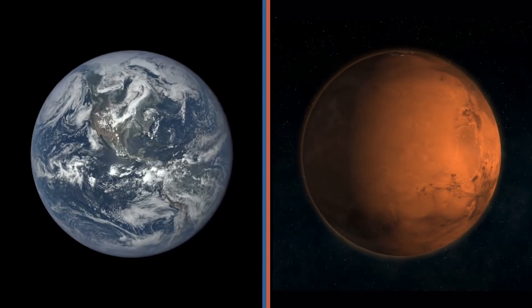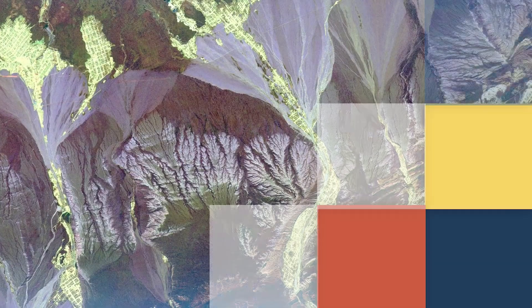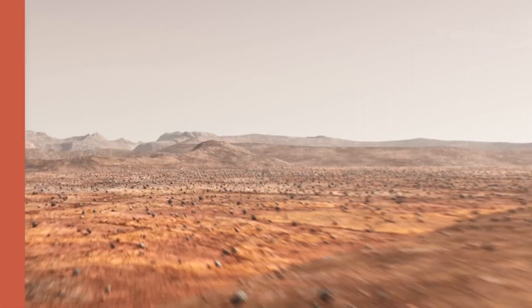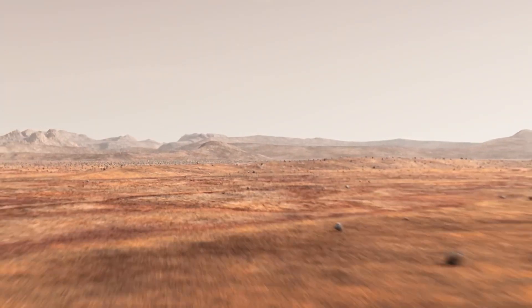However, they diverged, and we have two very different planets today. As the Earth progressed with plate tectonics and the development of life, Mars' geologic activity subsided, lost that water, and it became a much drier planet.